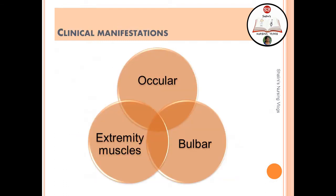The clinical manifestations of myasthenia gravis can be remembered with three words: ocular, extremity muscles, and bulbar. Myasthenia gravis is characterized by varying degrees of voluntary muscle weakness, and all of these categories reflect that.